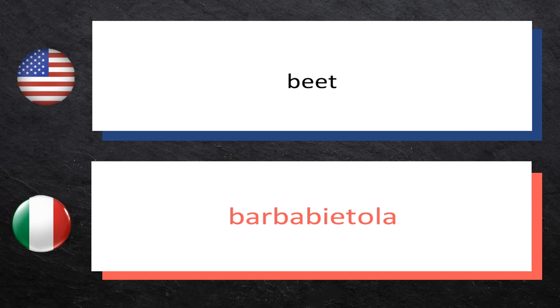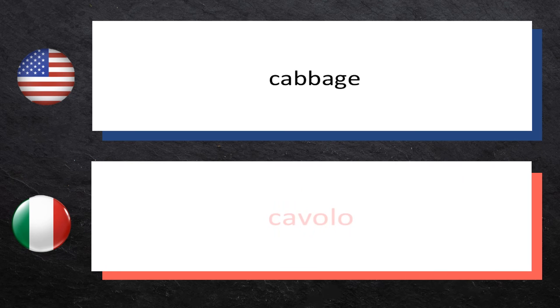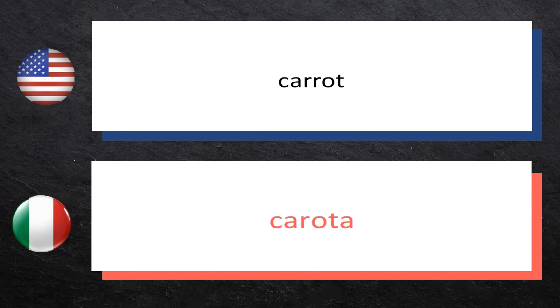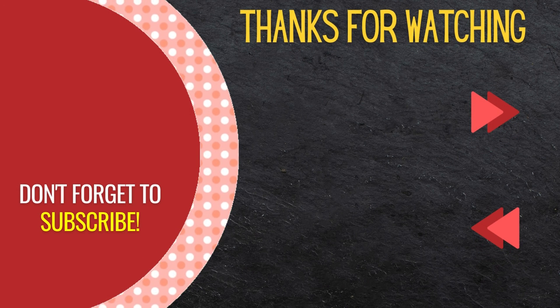Beetroot — Barbabietola. Barbabietola. Cabbage — Cavolo. Cavolo. Carrot — Carota. Carota. That completes the vocabulary lesson for today.